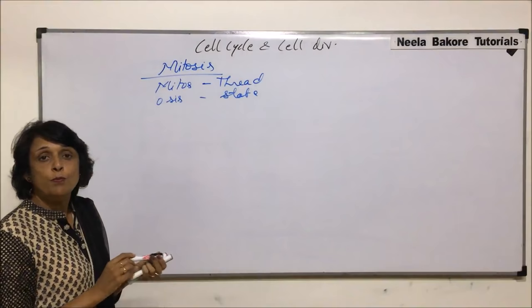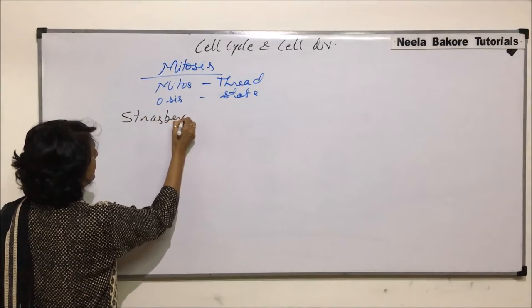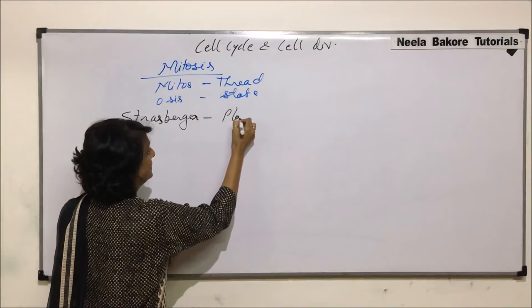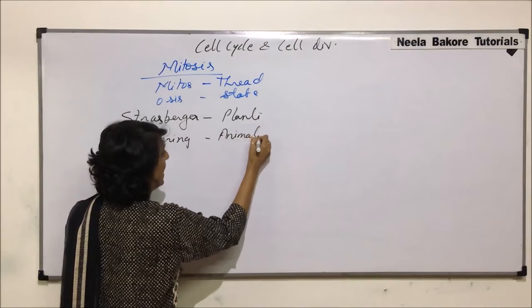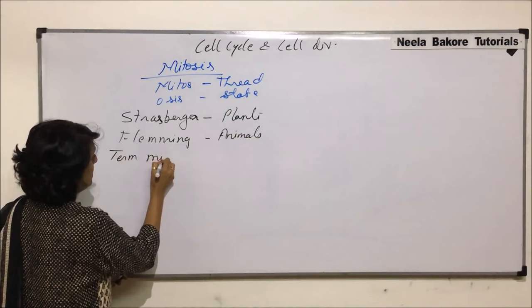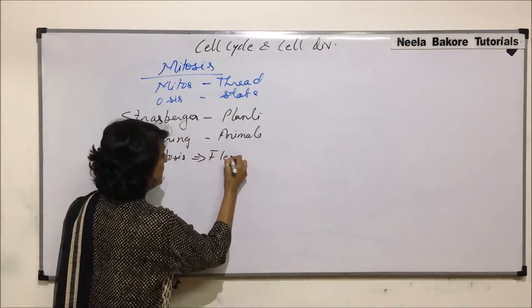The scientists who explained this process: Strasburger explained the process of mitosis in plants, and Fleming explained the same process of mitosis in animals, that is animal cells. The term mitosis was also coined by Fleming.